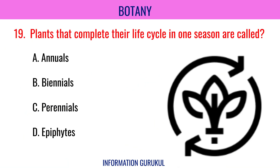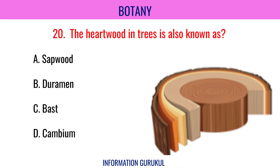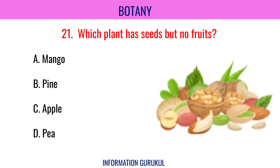Plants that complete their life cycle in one season are called annuals. The heartwood in trees is also known as duramen. Which plant has seeds but no fruits? Pine.